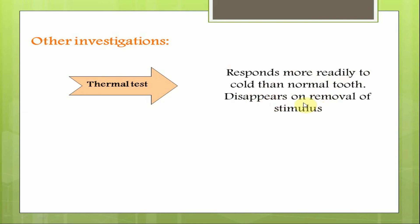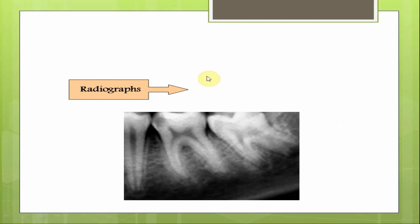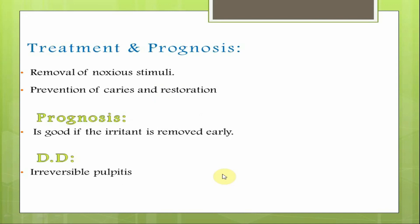Chairside investigations include thermal testing: the tooth will react more readily to cold than a normal tooth, and the pain will disappear on removal of the stimulus. An electric pulp test will be positive. On radiograph, you will see radiolucency in the coronal portion involving enamel and dentine, approaching the pulp, or secondary caries approximating the pulp. Importantly, the periapical area will appear completely normal with no periapical changes in all pulpal pathologies.